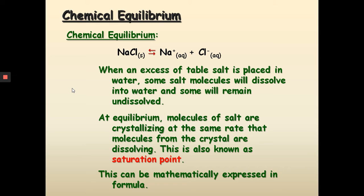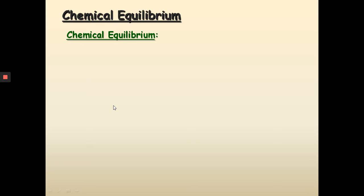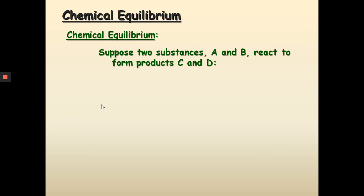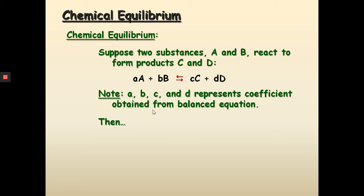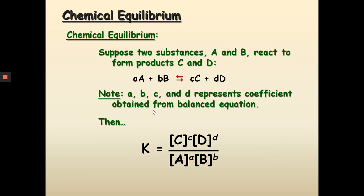This can also be mathematically expressed in a formula, and this is the real fun part. Suppose that there are two substances, A and B, which react to form products C and D. I'm going to put them into the chemical equation. Note: the lowercase a, b, c, and d represent the coefficients obtained from the balanced equation. The chemical equilibrium constant, called K, is expressed in this formula. The capital letters C, D, A, and B represent the concentration of these four different substances. These brackets represent the concentration measured in molarity, and the lowercase coefficients from the balanced equation now become the exponential power for each one of these chemical substances.